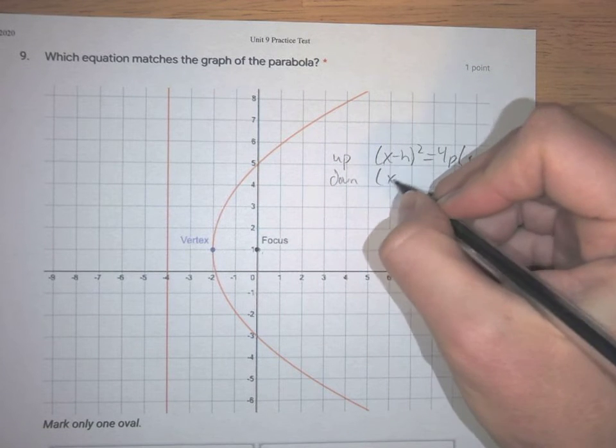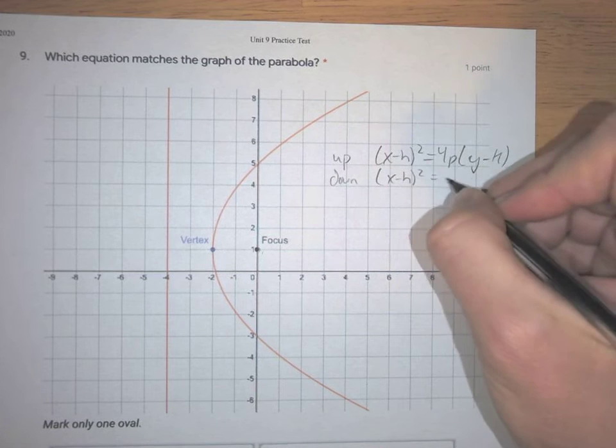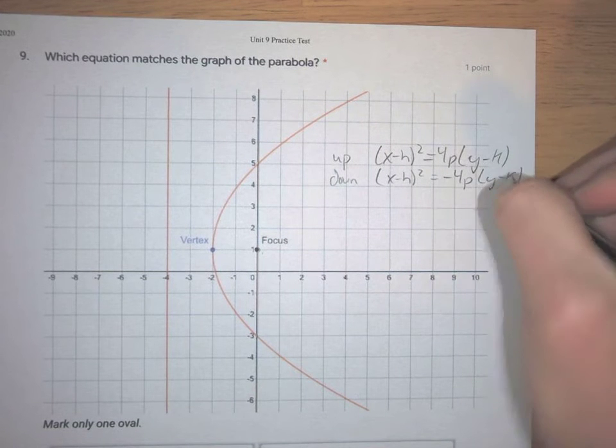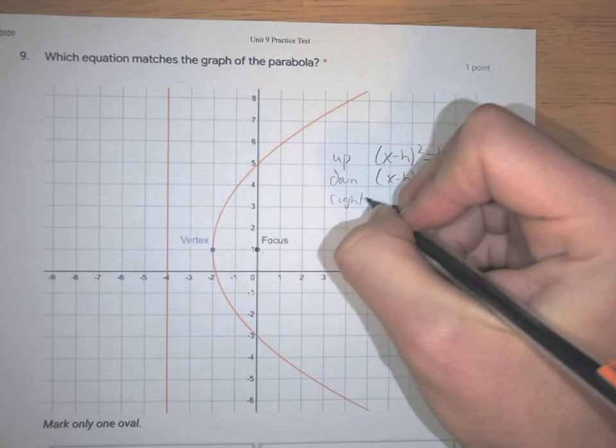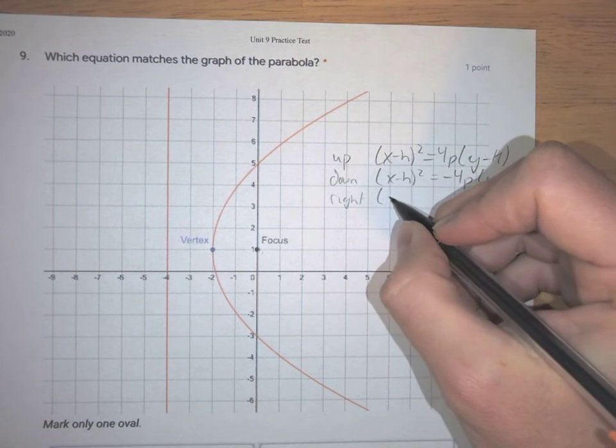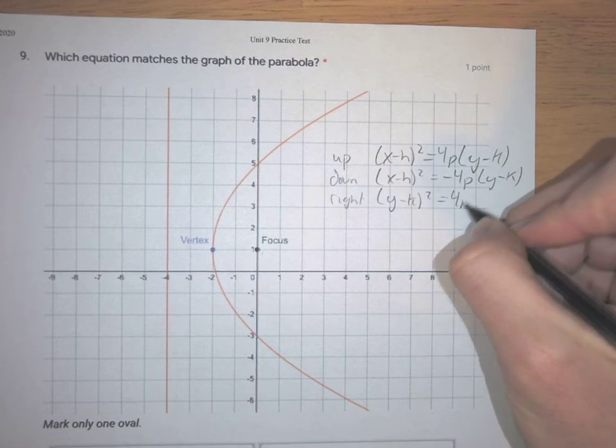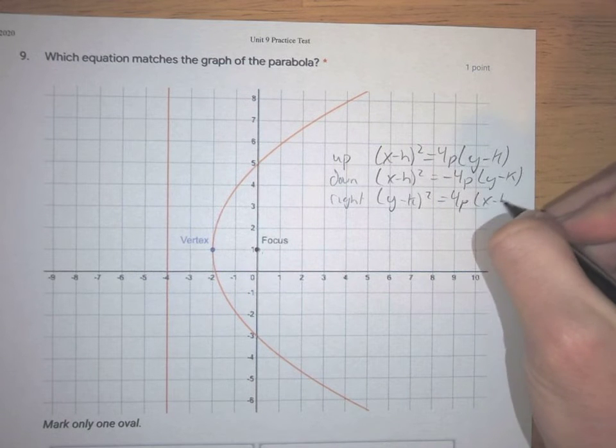We have our right version, which is (y-k)² = 4p(x-h).